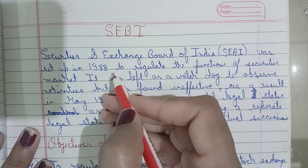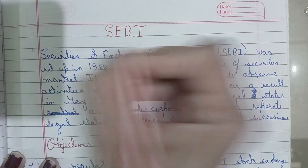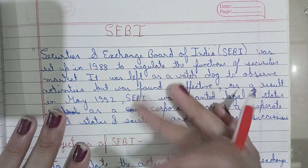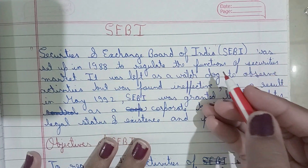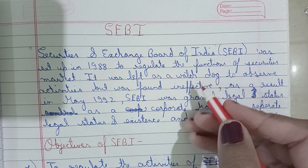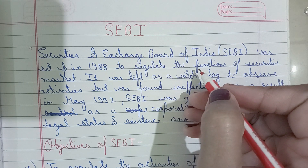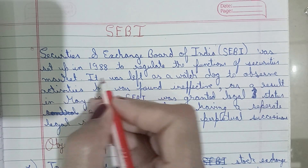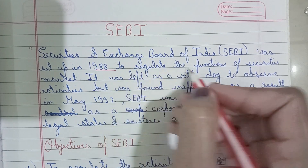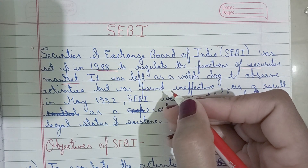SEBI's full form is the Securities and Exchange Board of India. This is its full form and you should remember it without any mistakes. This is an organization that has a platform to buy and sell securities. It was set up in 1988 to regulate the functions of the securities market.